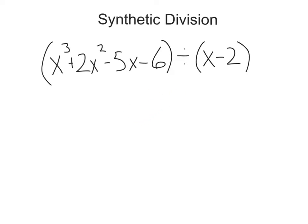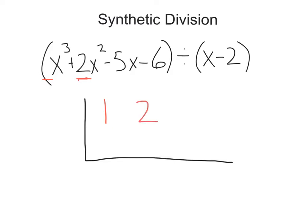First thing we do with synthetic division is set up a nice chart like so. It kind of looks like the division symbol, but flipped upside down. Here's our focus: the coefficients of whatever's being divided into. In this case, the coefficient of x cubed is one, the coefficient of x squared is two, the coefficient of x is negative five, and the term that has no x would be considered negative six.